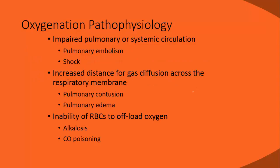Oxygenation pathophysiology includes impaired pulmonary/systemic circulation affecting Fick principles 1–3 — such as pulmonary embolism blocking blood flow to lungs, or shock from low volume. Increased distance for gas diffusion impacts Fick principle 2 at the respiratory membrane. Inability of red blood cells to offload oxygen at tissue relates to Fick principle 4.